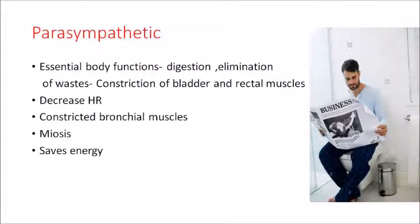The parasympathetic system is active when we are calm and cool. It deals with essential body functions like digestion, elimination of waste products, constriction of the bladder, and rectal muscles. It decreases heart rate and is associated with constricted bronchial muscles, miosis or constriction of the pupils, and energy saving. The parasympathetic system saves energy — you are calm, resting, or sleeping.